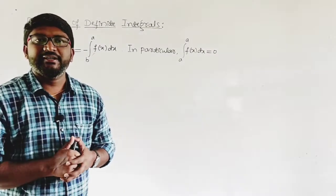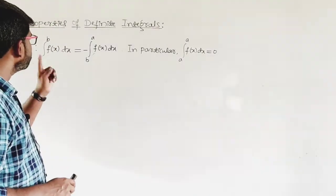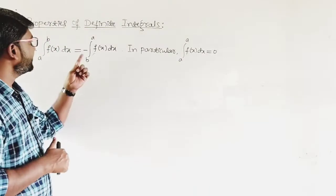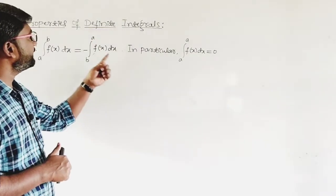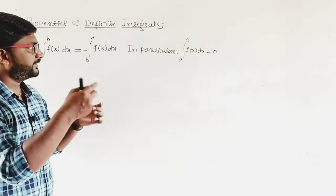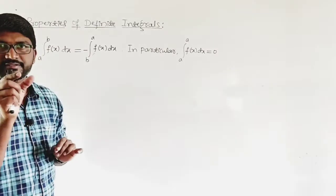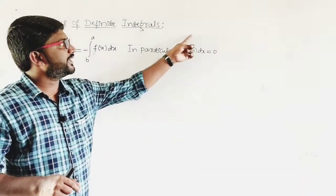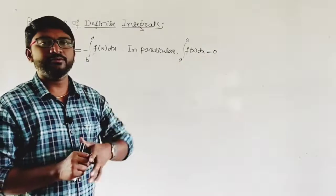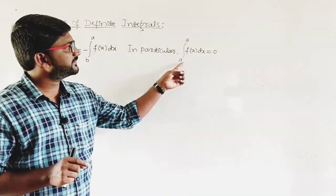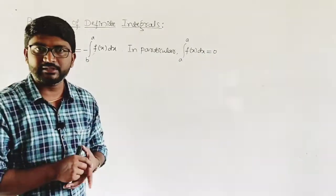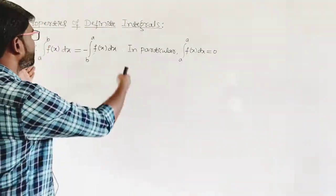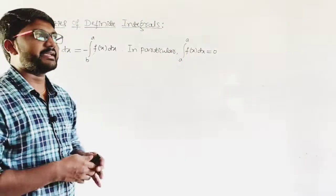The next property is P1. It states: integral a to b of f(x) dx equals minus integral b to a of f(x) dx. The sub-property states: in particular, integral a to a of f(x) dx equals 0. This means if the lower limit equals the upper limit, the value of the integral is zero. Let us prove the first part, then go for the second.